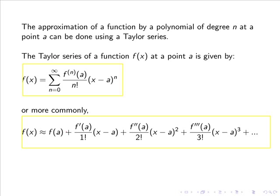As you can see from this formula, first we must evaluate the function at the point a. Then we calculate the first derivative and evaluate this derivative at the point a, divide by 1 factorial, and multiply by (x minus a) to the power of 1.